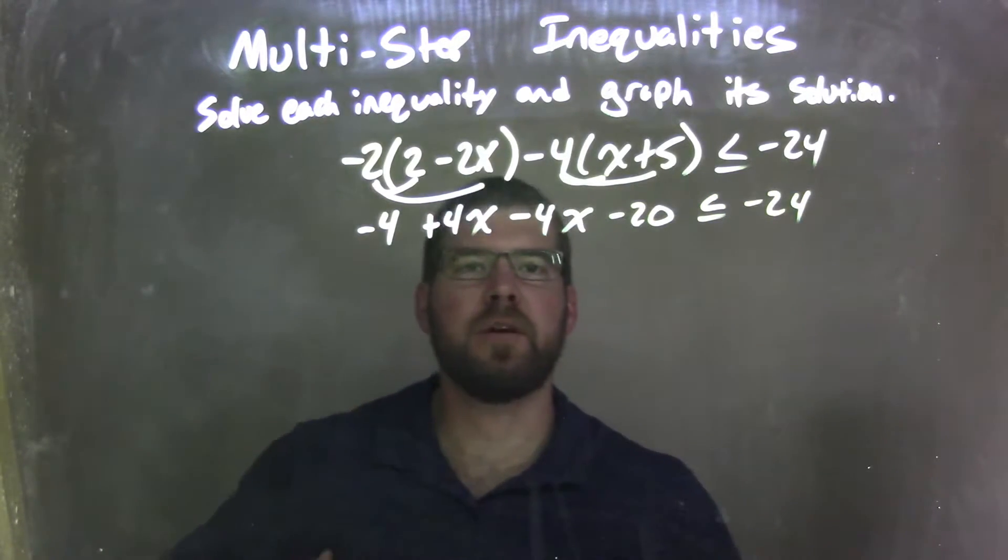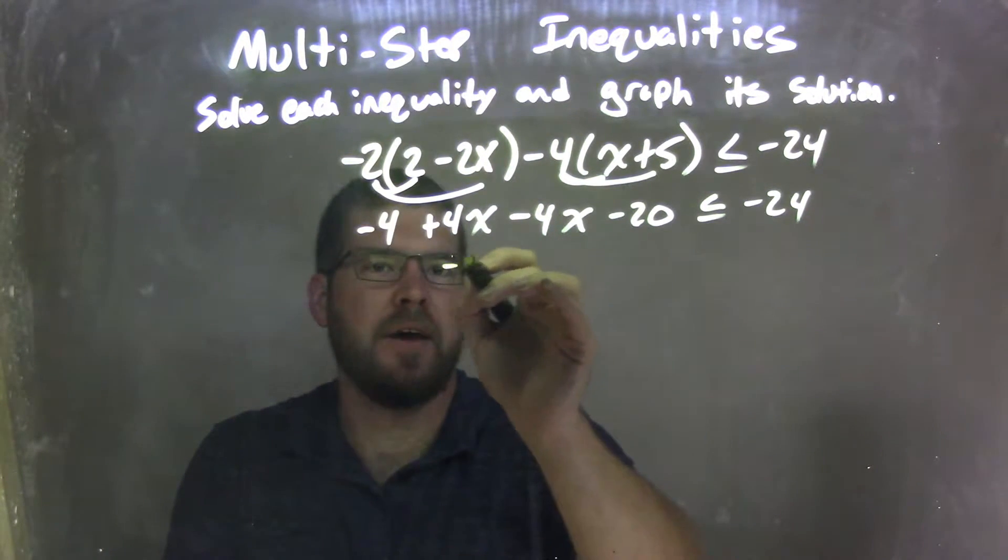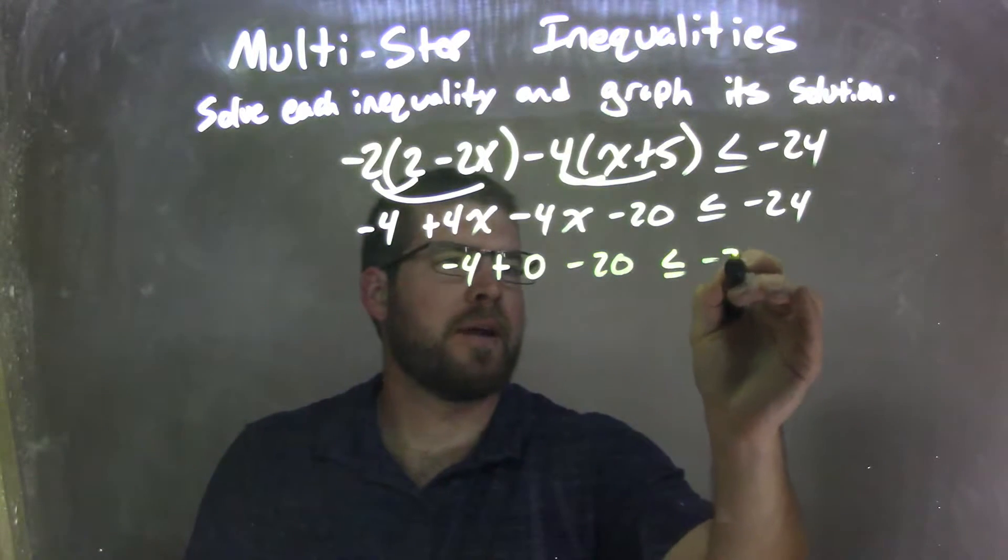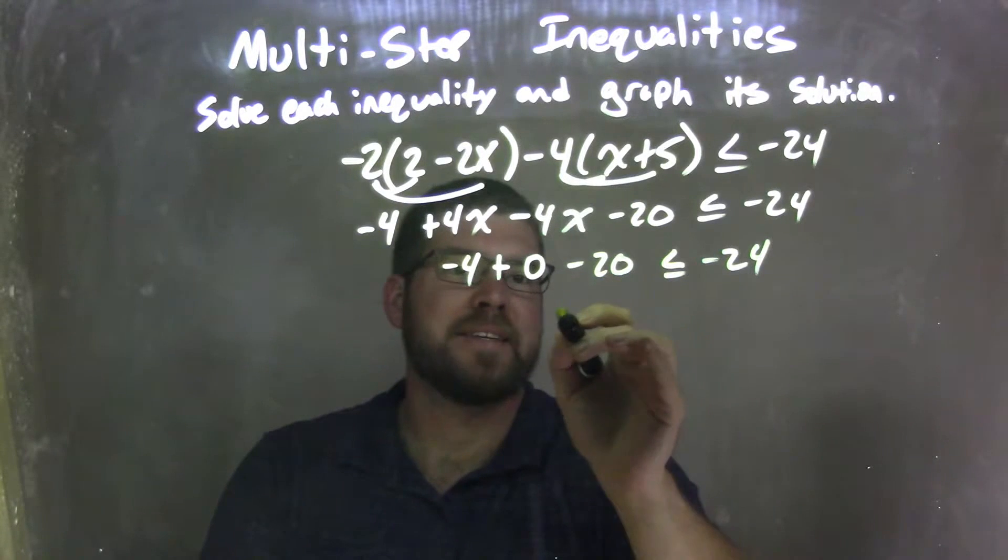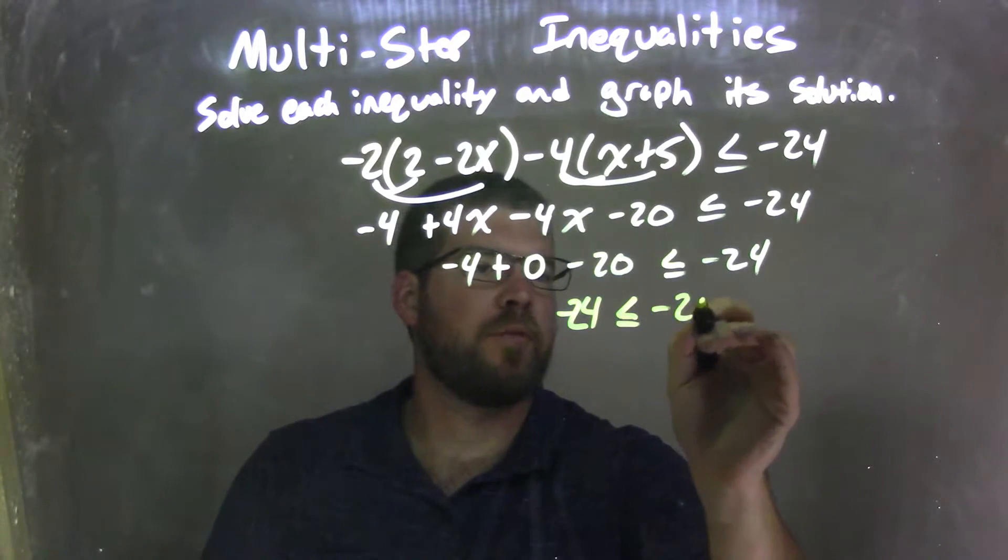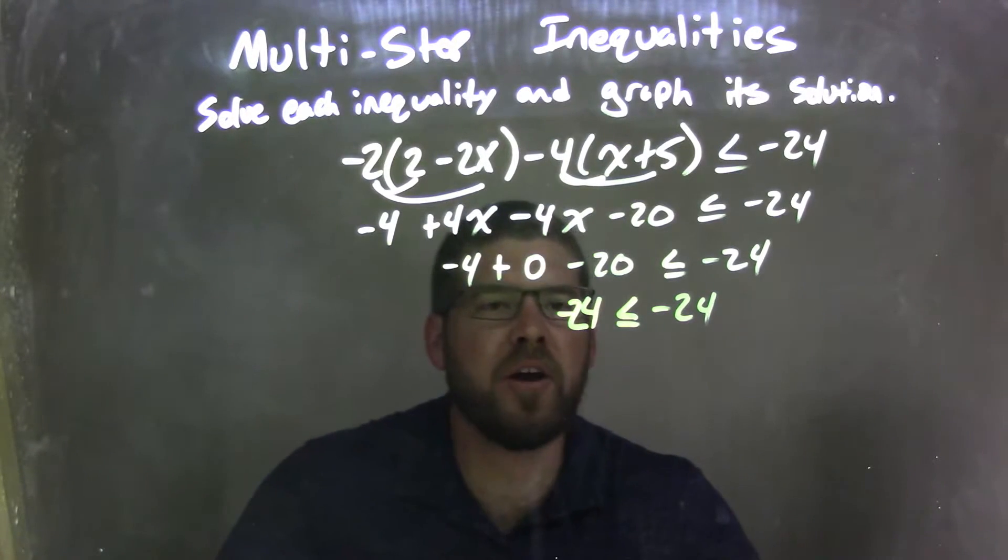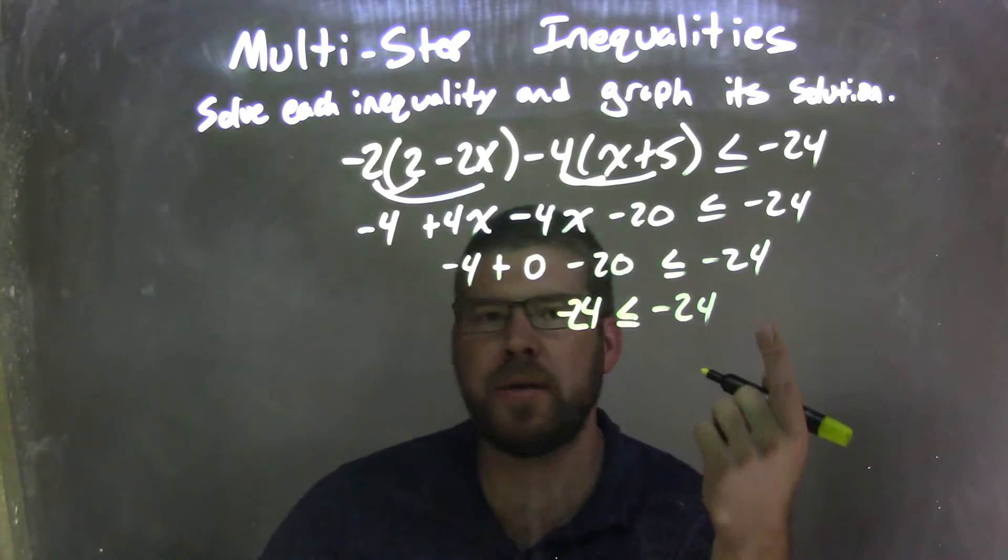Well, let's combine our like terms here. Well, 4x minus 4x is just 0. So we can have negative 4 plus 0 minus 20 is less than or equal to negative 24. And then negative 4 plus 0 is nothing, minus 20 is negative 24. So negative 24 is less than or equal to negative 24. Well, that's it. There's no more variable. And is this a true statement? Is negative 24 less than or equal to negative 24?